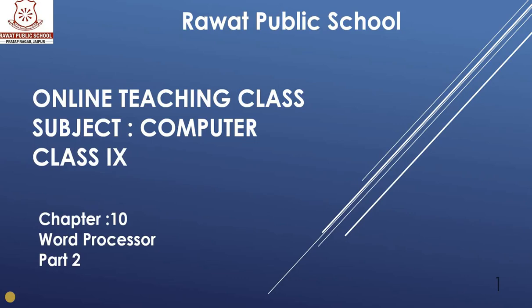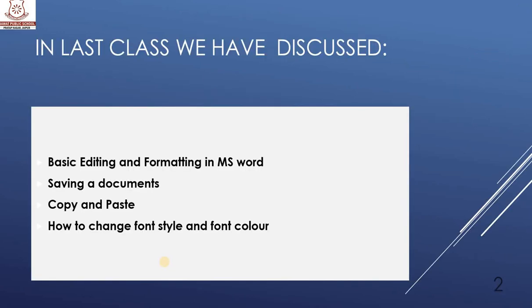Good morning. Today is your computer class for class 9th, chapter 10 — Word Processor, Part 2. In our last class we discussed basic editing and formatting in MS Word: changing the color, font size, making text italic or bold, saving a document, copy and paste, and changing the font style and font color.